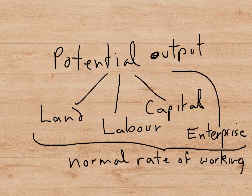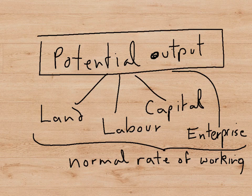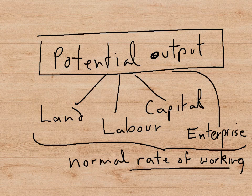In order to understand this, we first have to define the term potential output. The potential output of an economy is defined as the output that an economy produces when all the resources are used at their normal rate of working. So, if we imagine that an economy has a certain amount of land, labour, capital and enterprise, when these resources are being used at their normal rate, the output that is being produced is the potential output of that economy at that time.